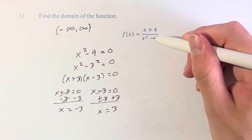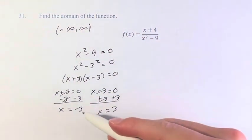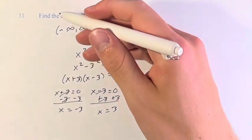So at these values, the denominator is equal to 0, and therefore we cannot input these values into the function, and they're not in the domain.